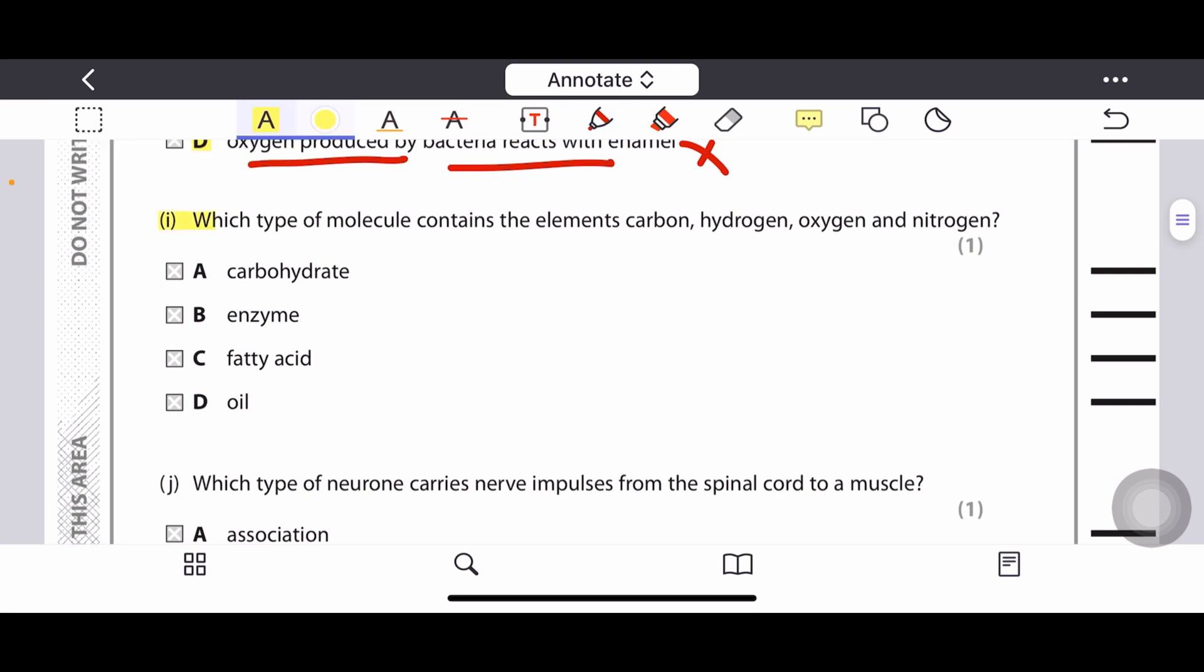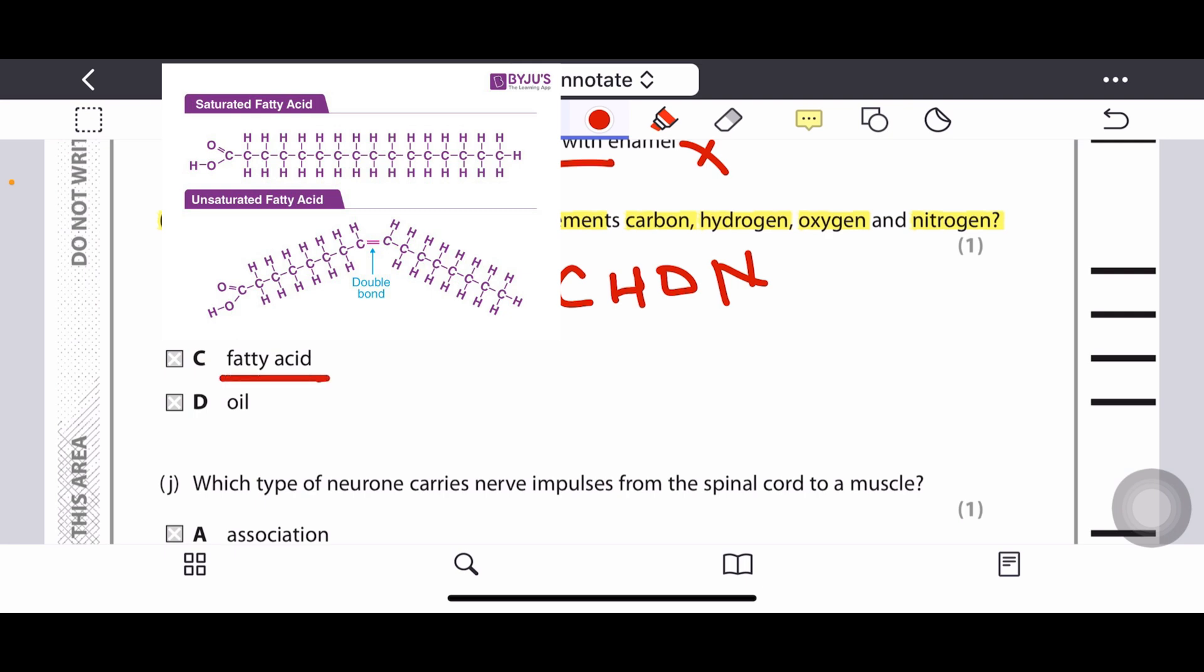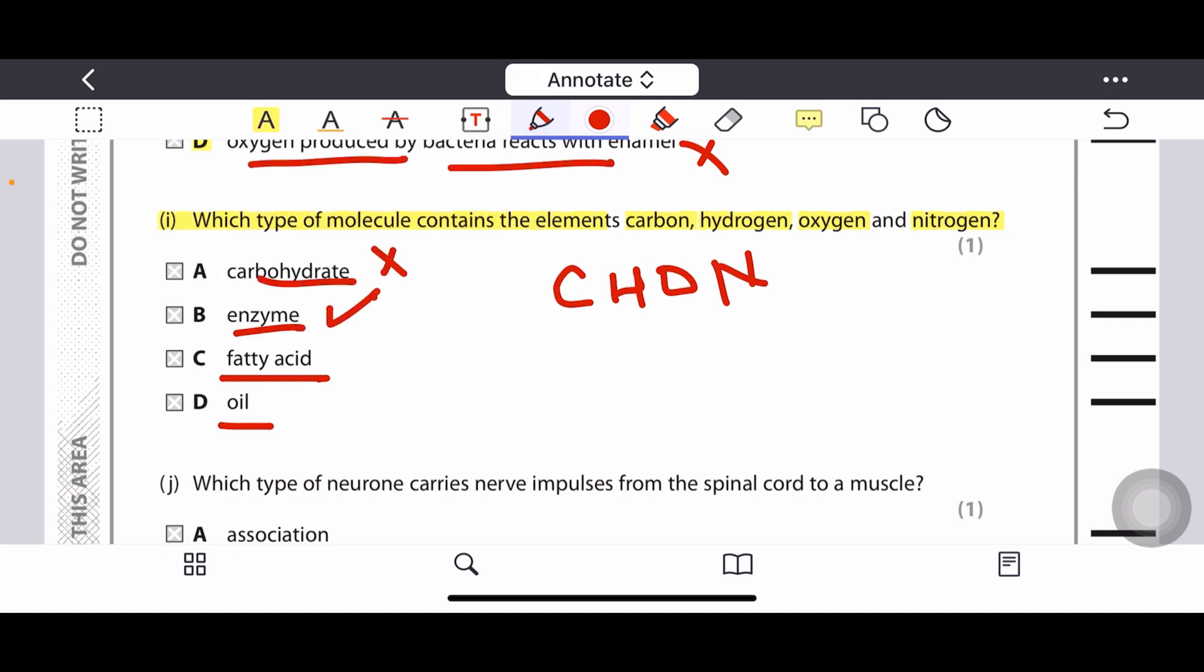Question I: Which types of molecules contain the element carbon, hydrogen, oxygen and nitrogen? All these elements are present in proteins. Carbohydrate contains only carbon, hydrogen, oxygen. Enzymes are a type of protein, so yes, this is the right option. Fatty acids are the parts of fats. Oils are also the types of lipids or fats, so these are the wrong options. So option B is the correct option.